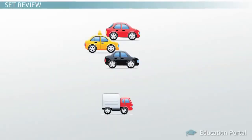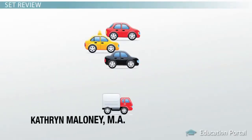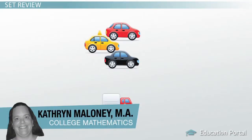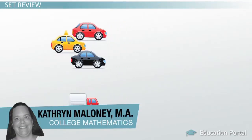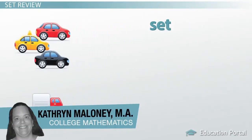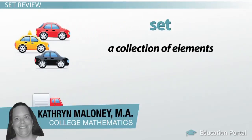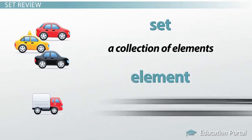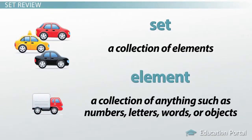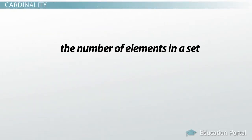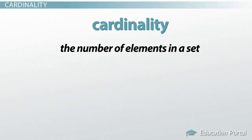Before we begin to talk about cardinality and types of subsets, let's review sets. A set is a collection of elements. An element is a collection of anything — numbers, letters, words, or objects. In math symbols, this means element. The number of elements in a set is called the cardinality of the set.